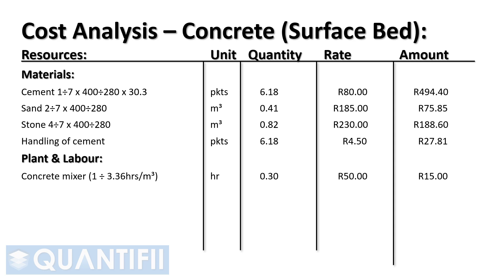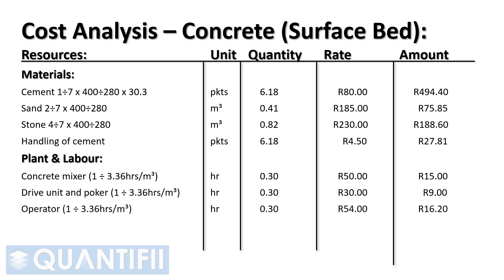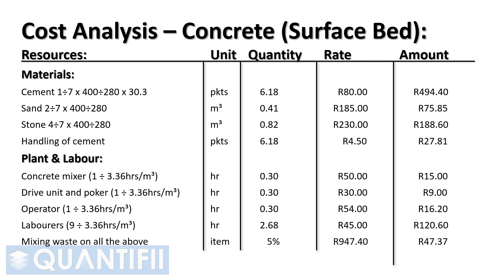Concrete mixer divided by 3.36 hours per cubic meter, multiplied by 50 Rand. Drive unit and poker divided by 3.36 hours per cubic meter, multiplied by 30 Rand. An operator divided by 3.36 hours per cubic meter, multiplied by 45 Rand. Lastly, we add mixing waste on all the above items of 5%. The net cost for a cubic meter of concrete is therefore 994 Rand and 77 cents per cubic meter.